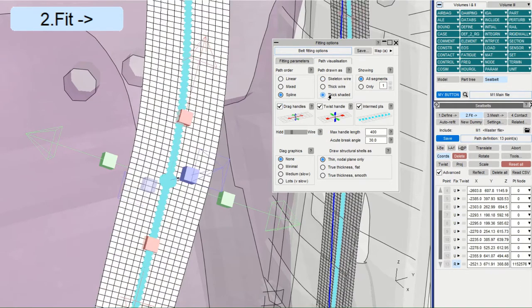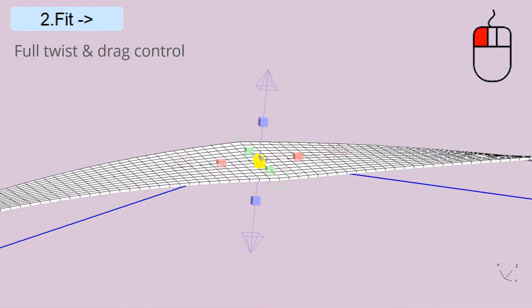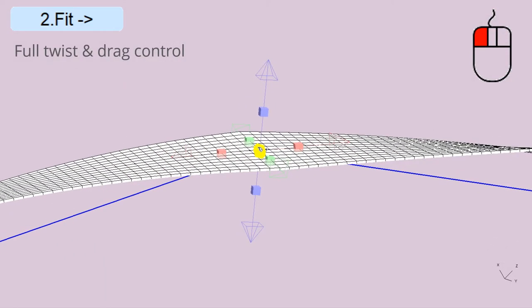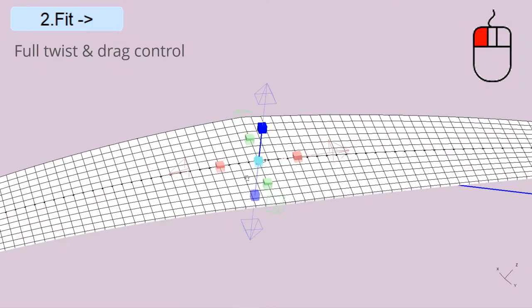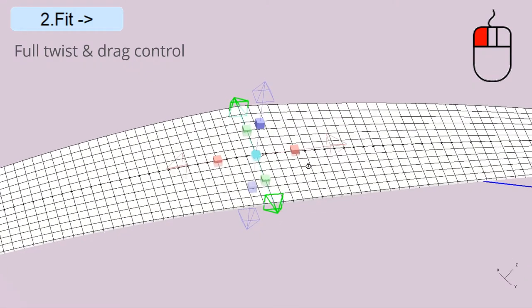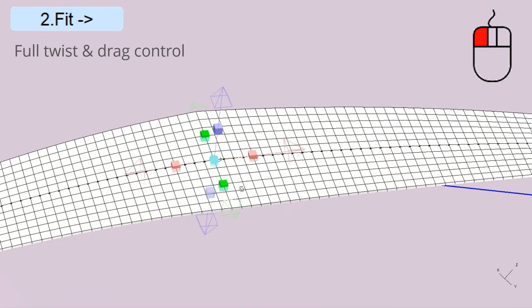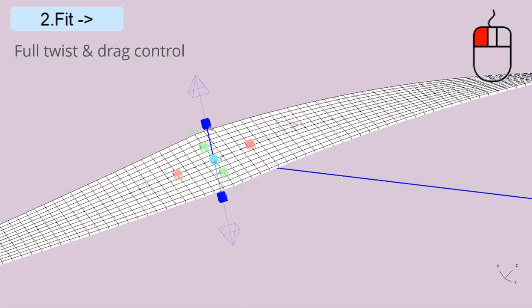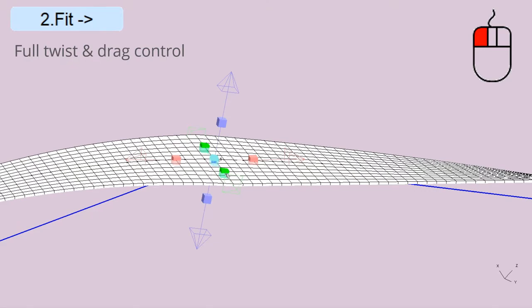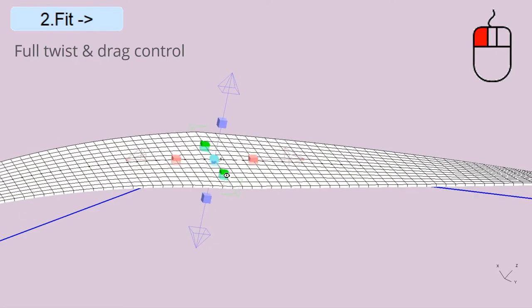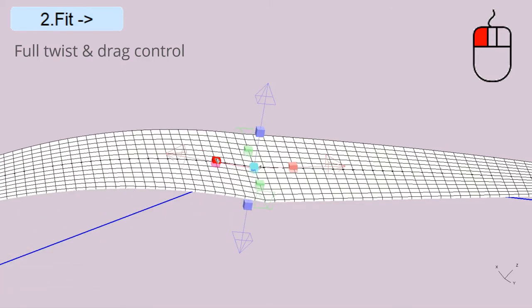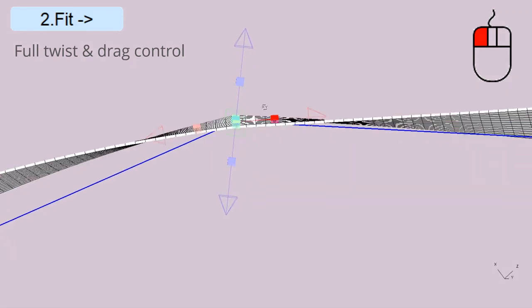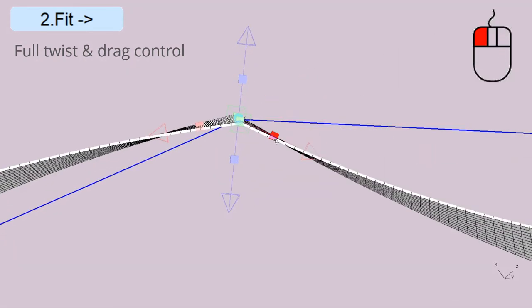Let's take a closer look at one point on the belt path. First, the point itself can be dragged in any direction. Dragging the arrow handles will pull the point in that local direction. Dragging the cube handles will twist the belt. Blue and green twist the plane of the belt at that point. Red cubes break the spline and can give us a sharp change in direction, independent of the other side.